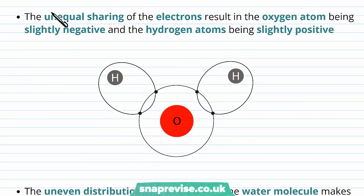Because they're unequally shared across the molecule, these electrons result in the oxygen atom being polar. We have a slightly negative oxygen atom and we have the hydrogen atoms being slightly positive. Let's just illustrate how this is working. We've got our covalent pair as before and it's being pulled to the oxygen nucleus more so than the hydrogen nucleus.